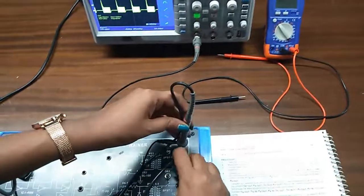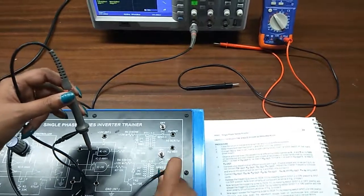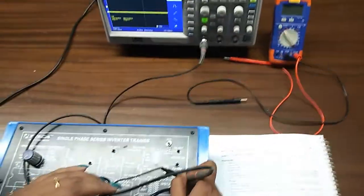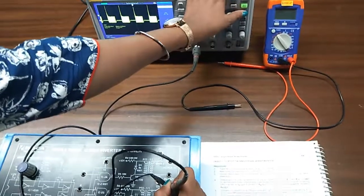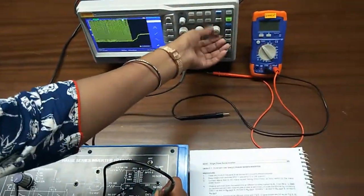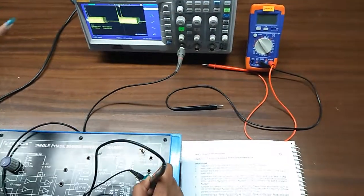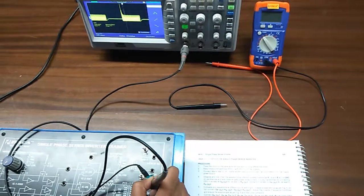Now like this we will check the waveform at Gn out. This is also the firing pulses to turn on the SCR.